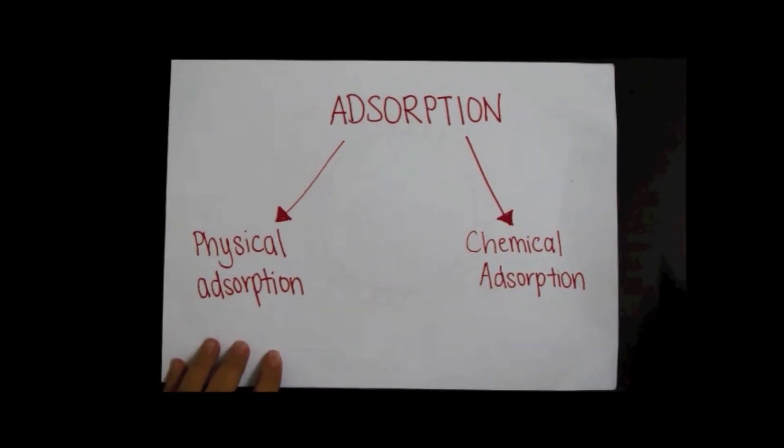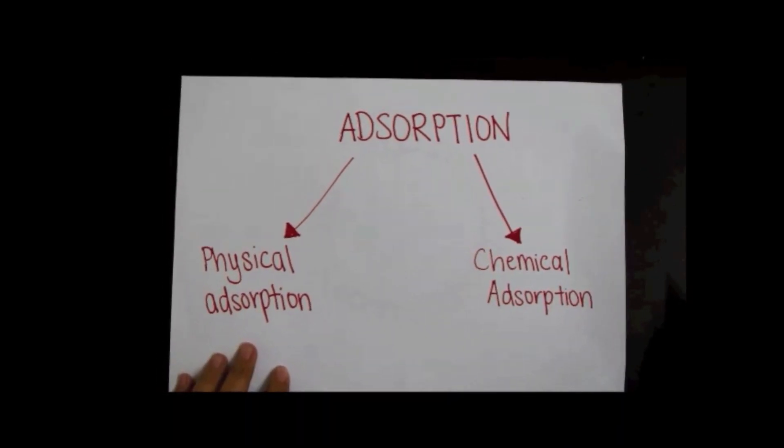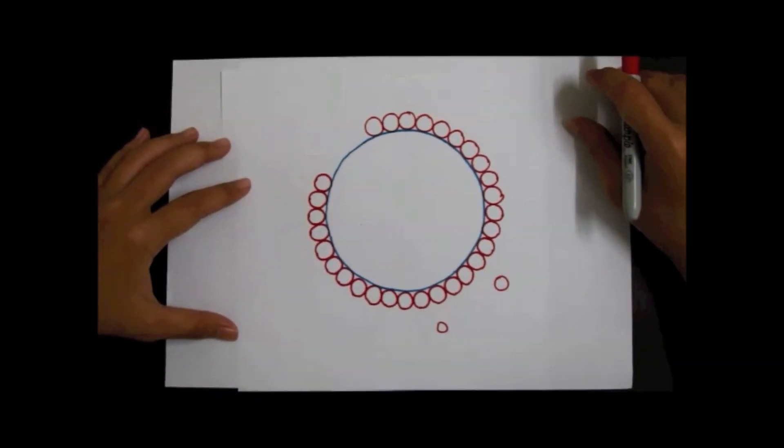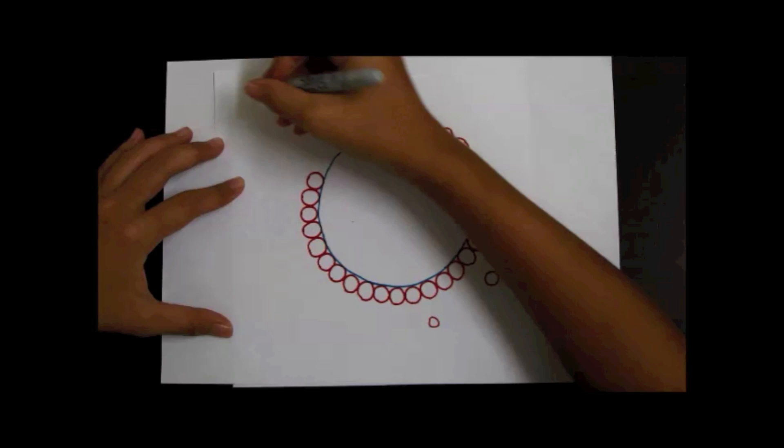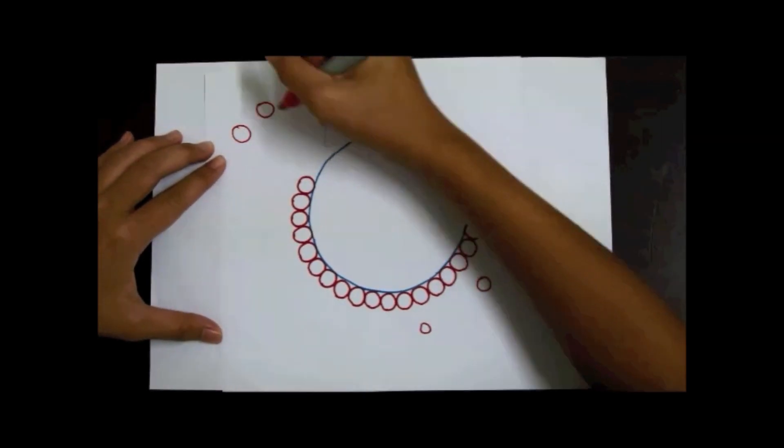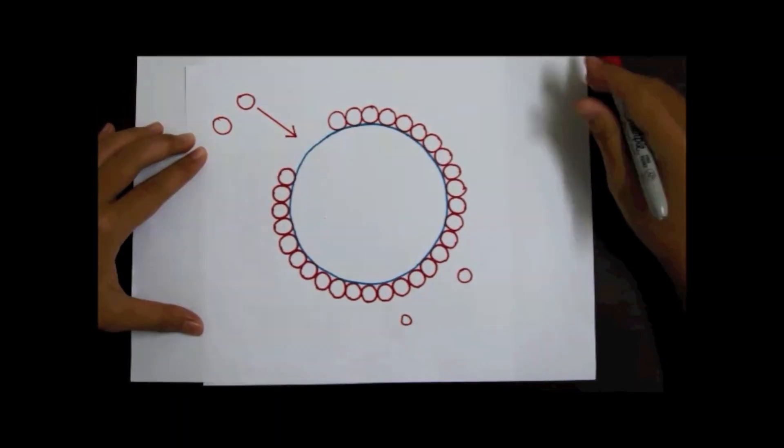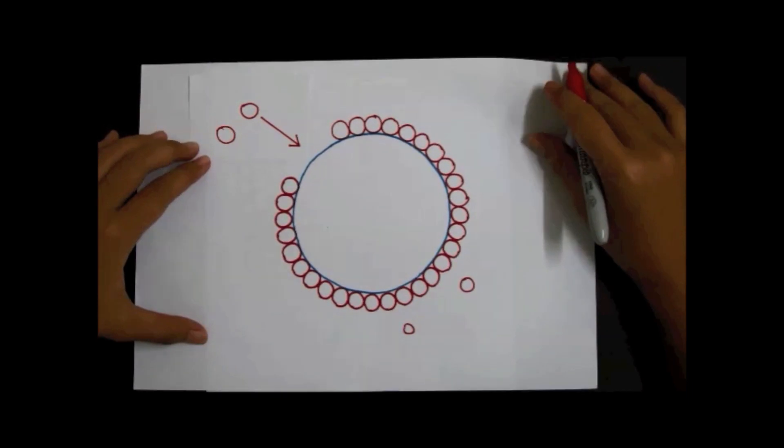There are two types of adsorption: one being physical adsorption and the other chemical adsorption. Using this diagram, we explain physical adsorption, also known as physisorption, in which the surrounding gas molecules are attracted to the surface due to intermolecular forces such as van der Waals forces.